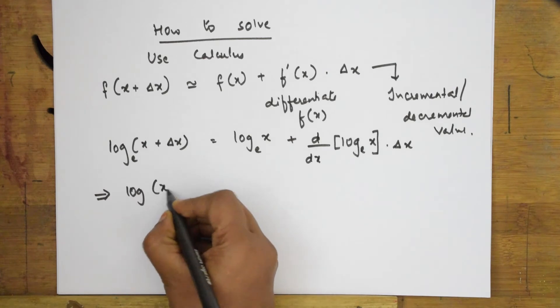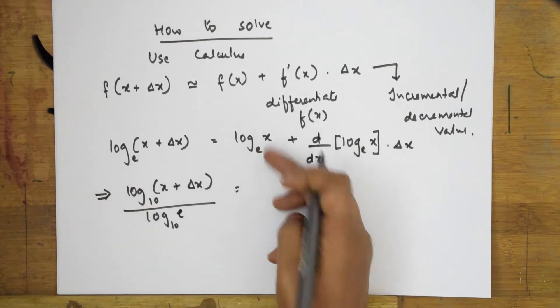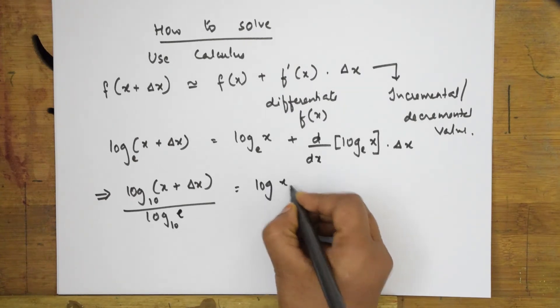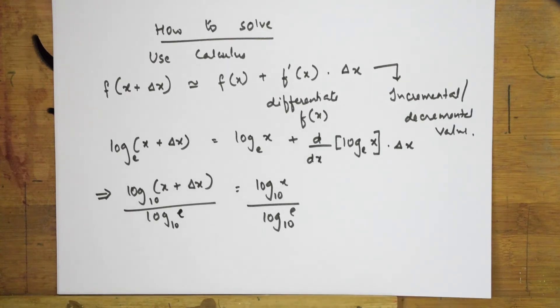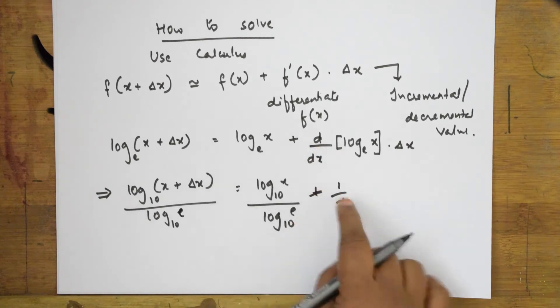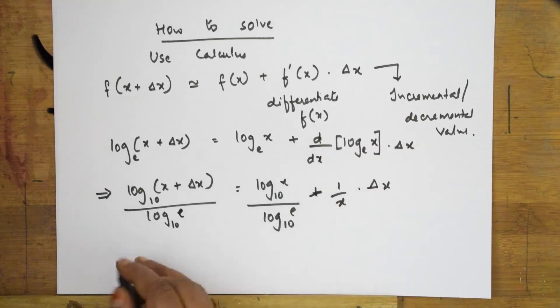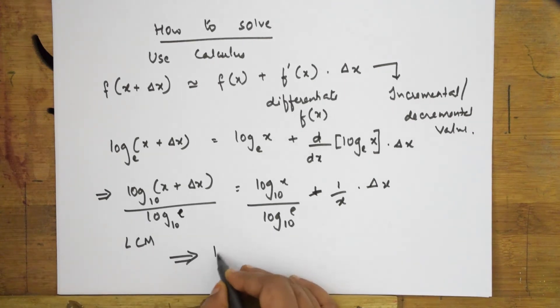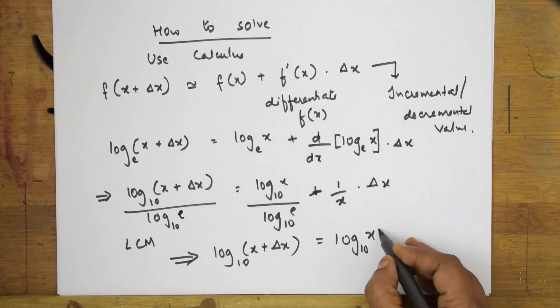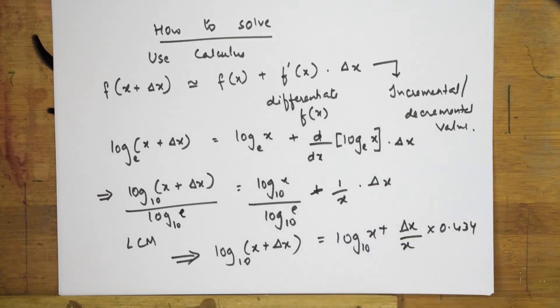This can be written as log(x + Δx) base 10 divided by log e base 10. This is equal to log x base 10 divided by log e base 10. If I take the whole thing, when I write in this form, log x base 10 by log e base 10. d/dx is nothing but 1/x. Remember that? d/dx is nothing but 1/x. So, this is written as (1/x) × Δx. Remember this quantity.